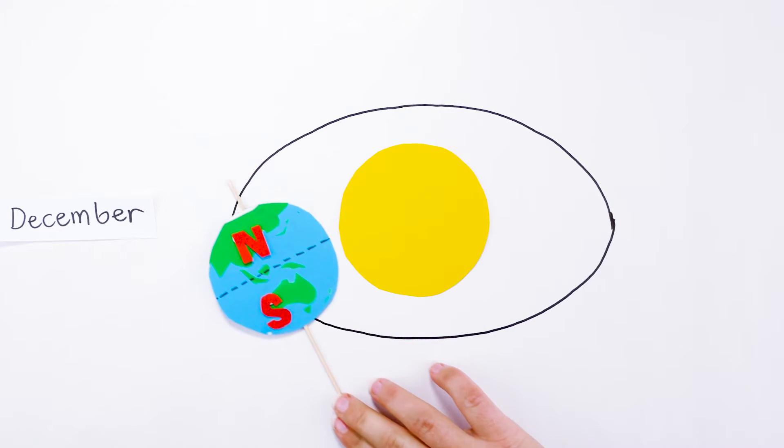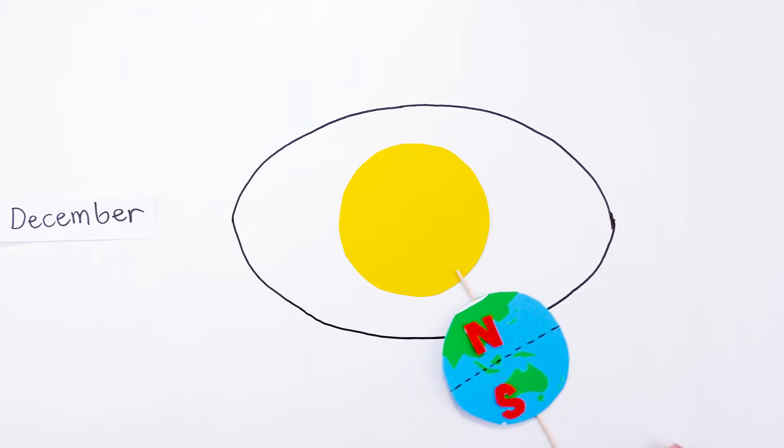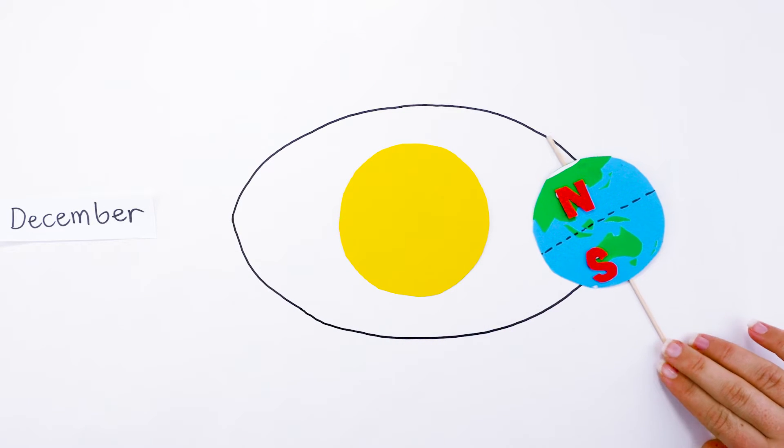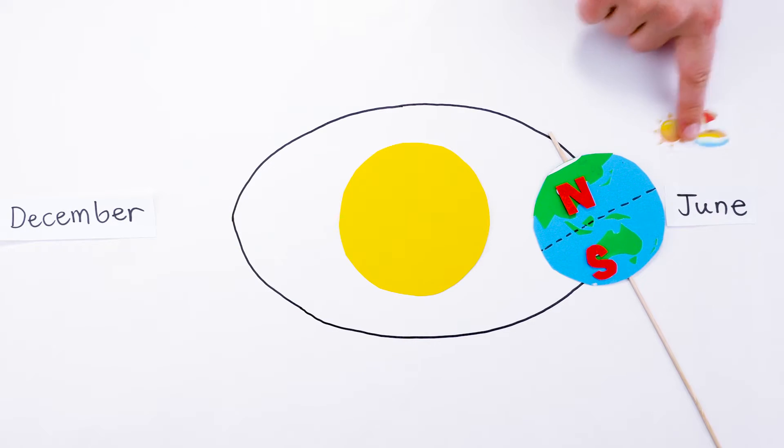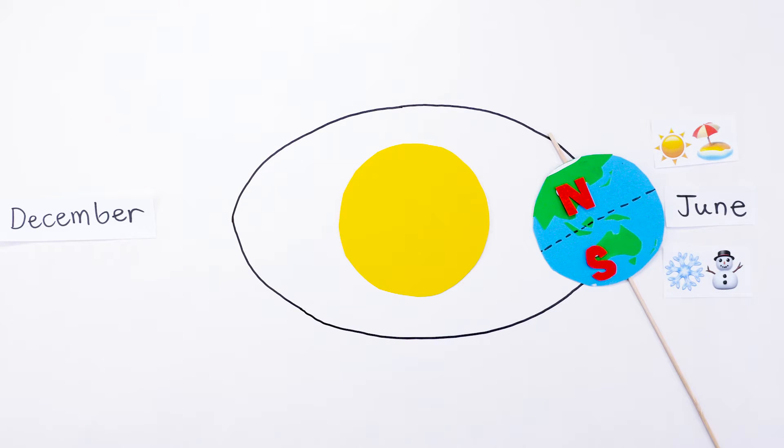As the Earth travels around the Sun the direction of its tilt stays the same. So six months later in June the northern hemisphere is now pointing more towards the Sun. It's summer and the southern hemisphere is pointing away so it has winter.